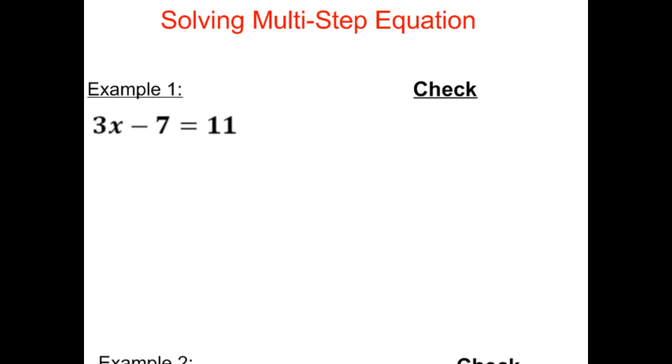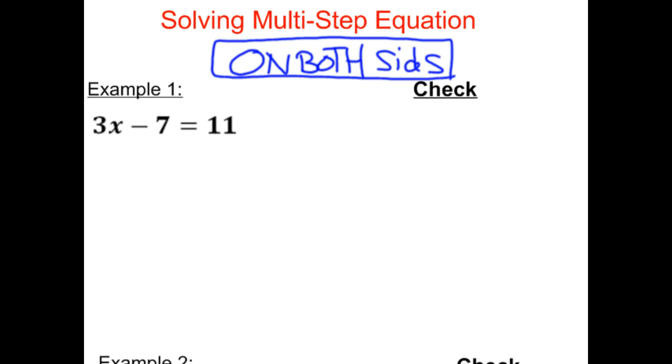3x minus 7 equals 11. Solving for x means getting x by itself on one side of the equation. And remember, whatever we do on one side, we have to do on the other side. We have to do everything on both sides. That's the key, keeping the equality there.